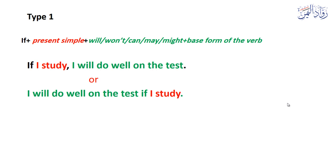As you know, there are three types of conditional sentences. Let's look at the first one. The first type is called Type 1. Type 1 structure is like this: 'if' plus present simple — this is called the condition. In the result: will, won't, can, may, might, plus the verb in the base form.